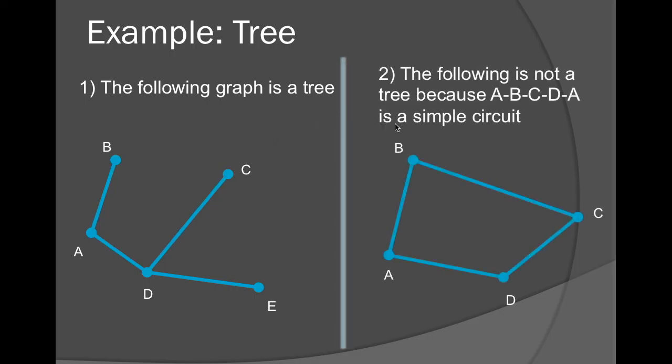The following is not a tree because we have a simple circuit here. A, B, C, D, and A is a simple circuit. We start and end at the same vertex and we hit every edge just once. Therefore, this is not a tree.